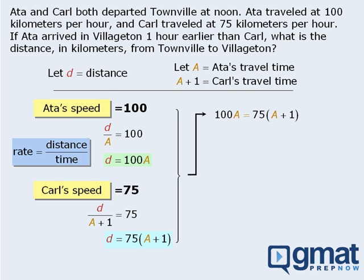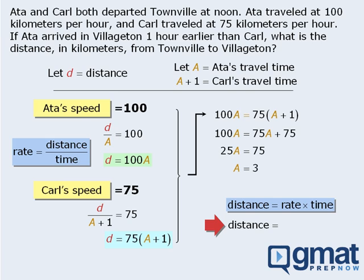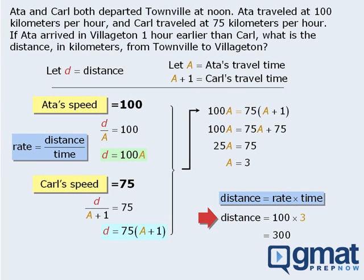To solve this equation for A, we expand the right-hand side, then subtract 75A from both sides, and divide both sides by 25 to get A equals 3. This tells us that Ada's travel time was 3 hours. To find the distance D, we apply the distance formula using Ada's travel information: distance equals 100 km/h times 3 hours, which equals 300. So the distance is once again 300 km.